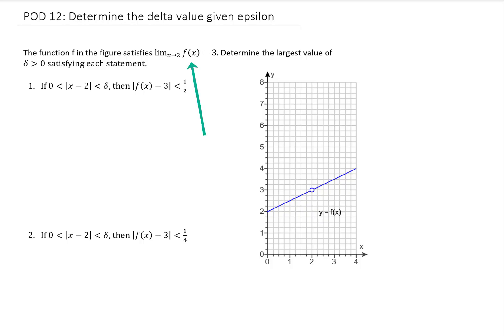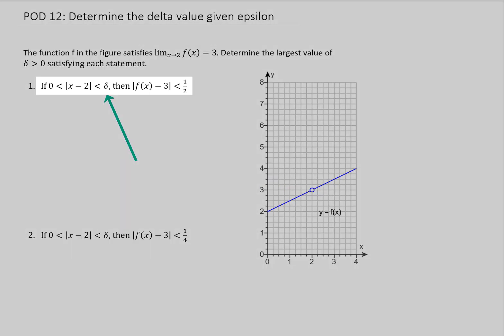So we have a function that satisfies the limit as x goes to 2 equals 3. We can confirm that down in this picture here as x approaches 2, our y value approaches 3. We're going to determine the largest value of delta that satisfies this statement.